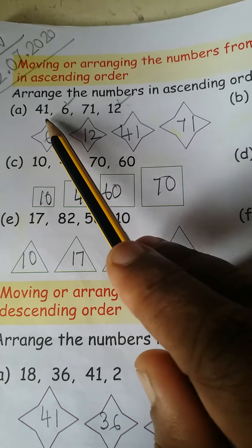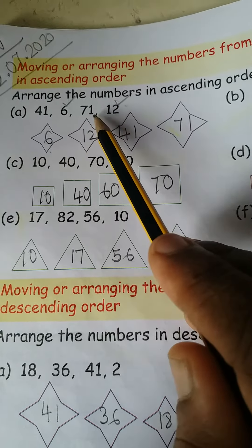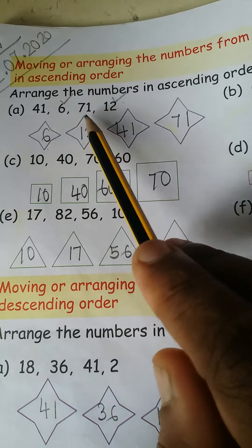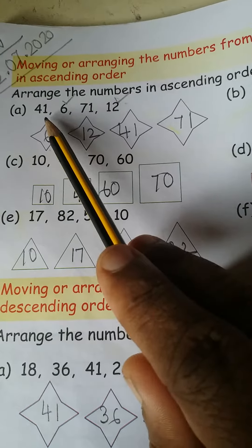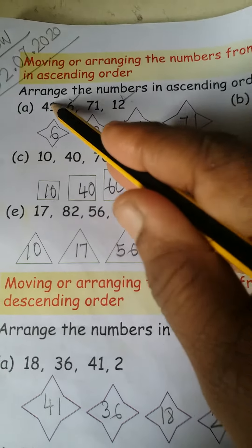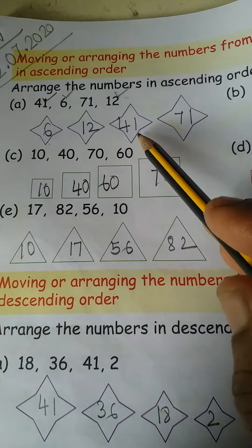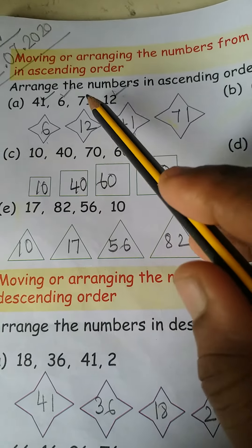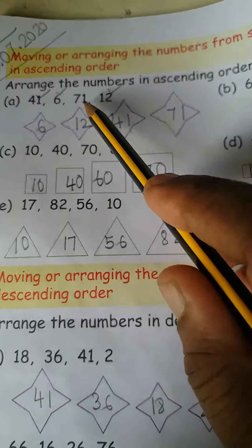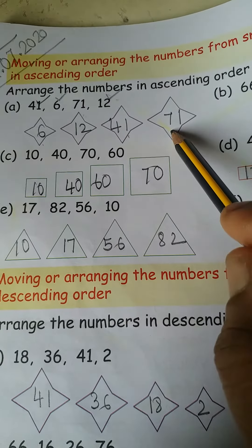And then 41 and 71. Which number is smallest number? Both of these numbers? 41. So tick the 41 and write here 41. And another last number is remaining, 71. So please write here 71.